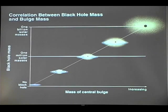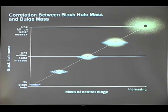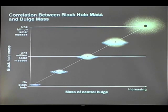Hubble discovered something more: there is a tight relation between the mass of the black hole and the mass of the central bulge of stars at the centers of these galaxies. The more massive the bulge, the more massive the black hole. This tells us that the galaxy and the black hole do not evolve independently of each other — the fact that the mass of the black hole is tightly correlated with the mass of the bulge means they co-evolve.